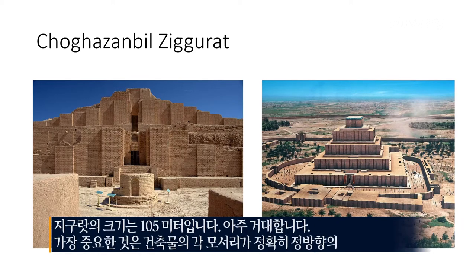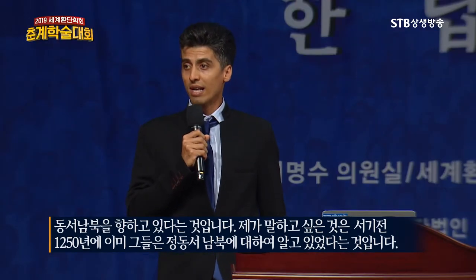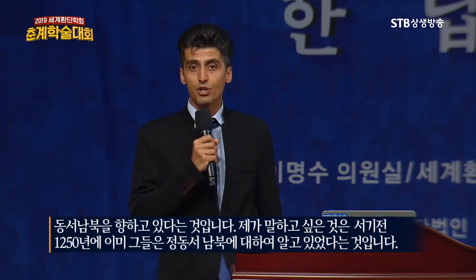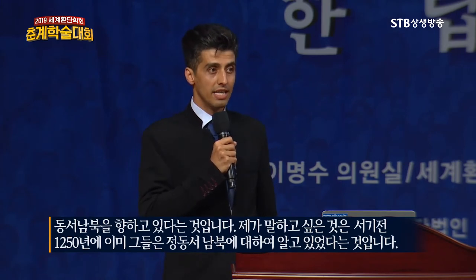The size of the ziggurat is 105 meters by 105 meters — it's actually huge. One of the most important features of the building is that each corner shows an exact geographical direction: exact north, exact south, exact east, and exact west. I'm talking about 1,250 years before Christ — they already had the knowledge to recognize the exact cardinal directions.